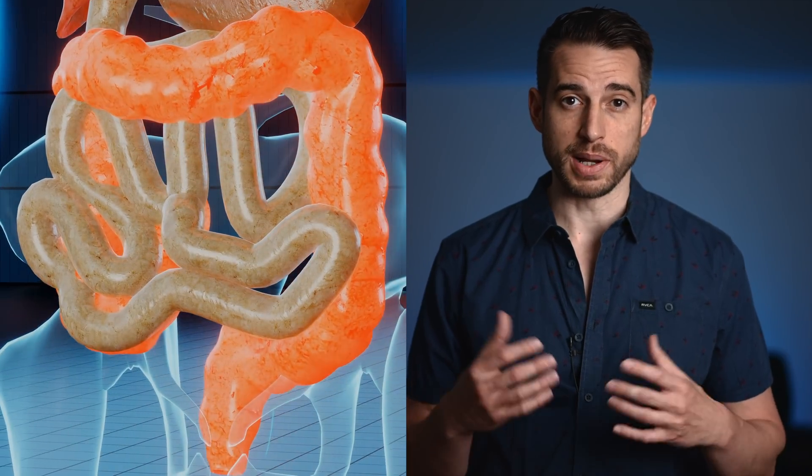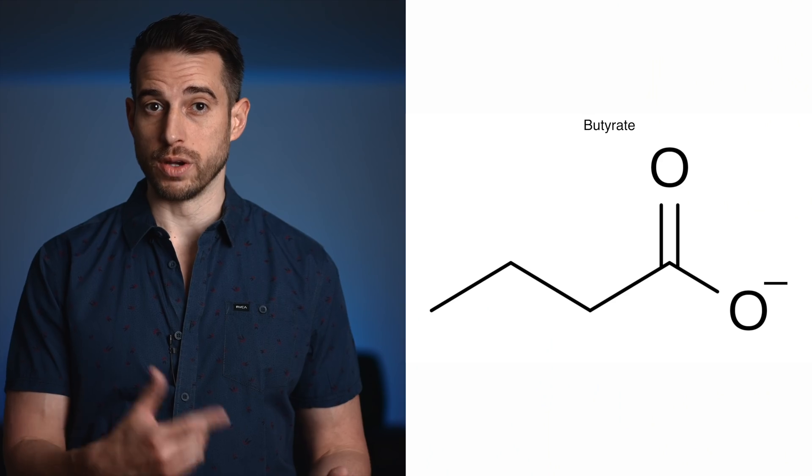The other fiber is soluble fiber. This fiber dissolves during digestion and turns into a gel-like substance. It's not digestible, just like insoluble fiber, but some components of it can be broken down by our gut bacteria in the colon. For example, soluble fiber is metabolized by gut bacteria into short-chain fatty acids, one of those being butyrate, which gets absorbed into the bloodstream. That's great because butyrate has anti-inflammatory properties.